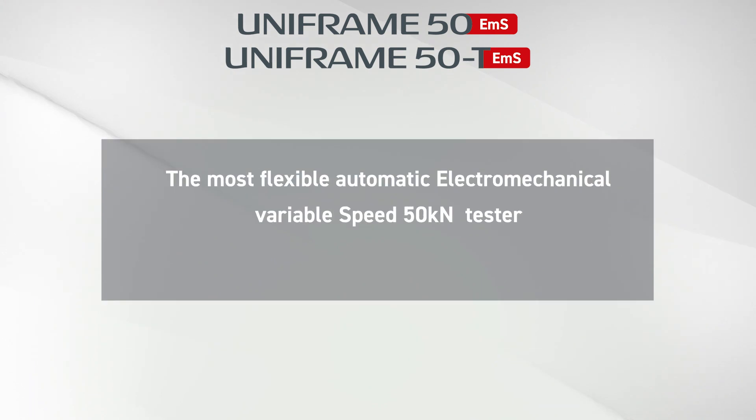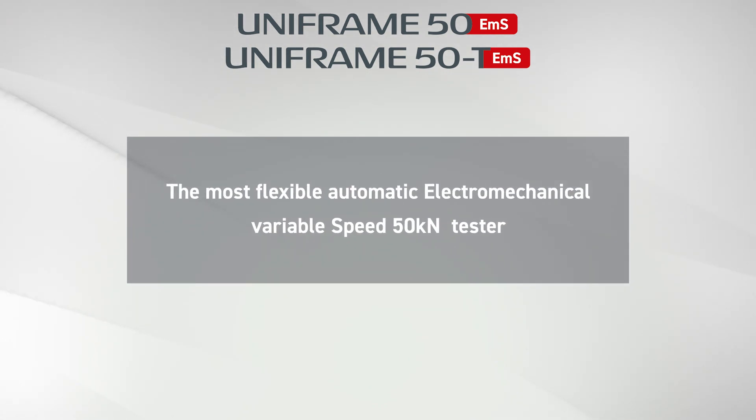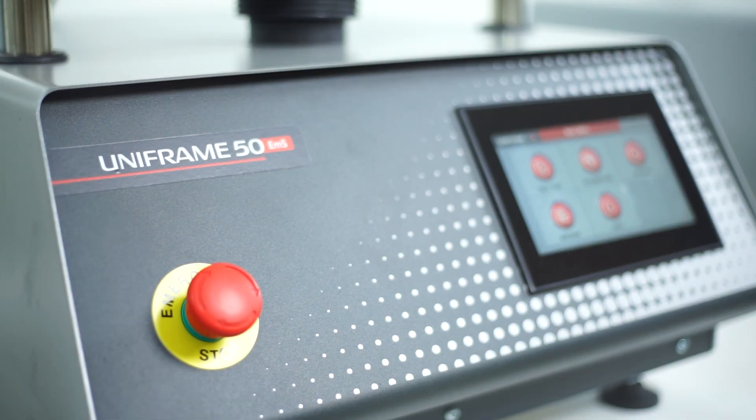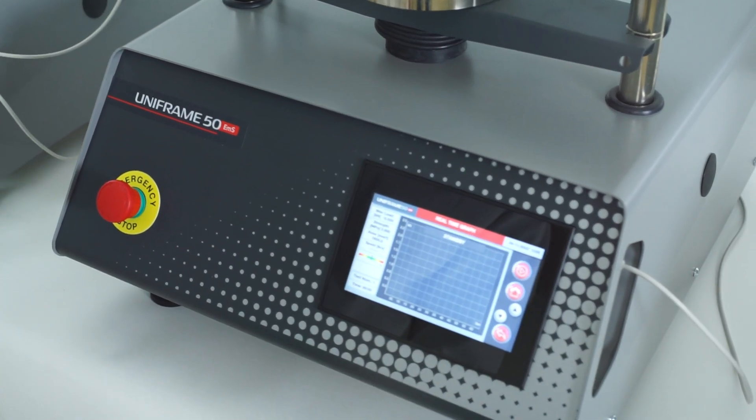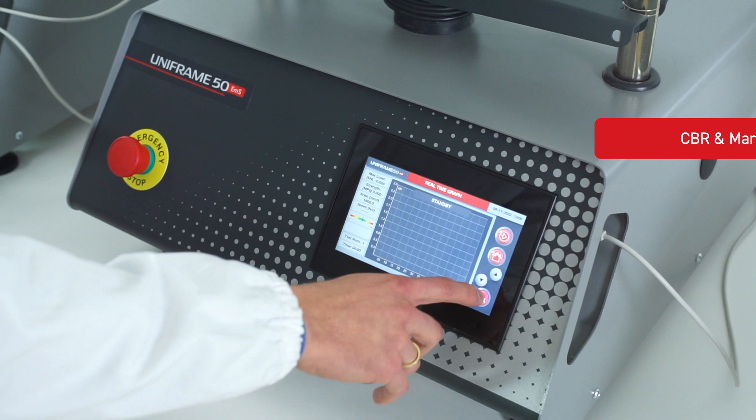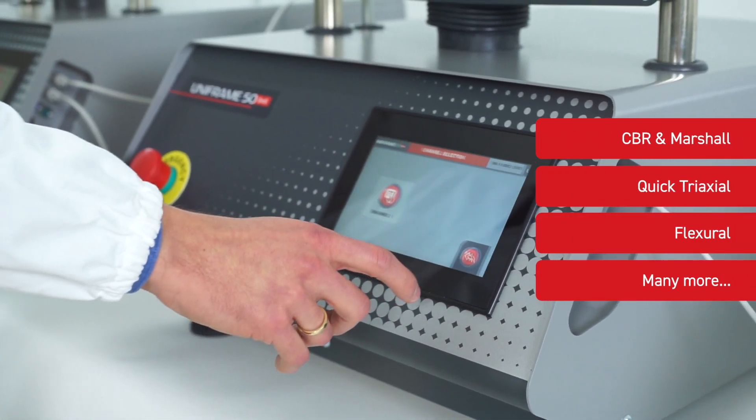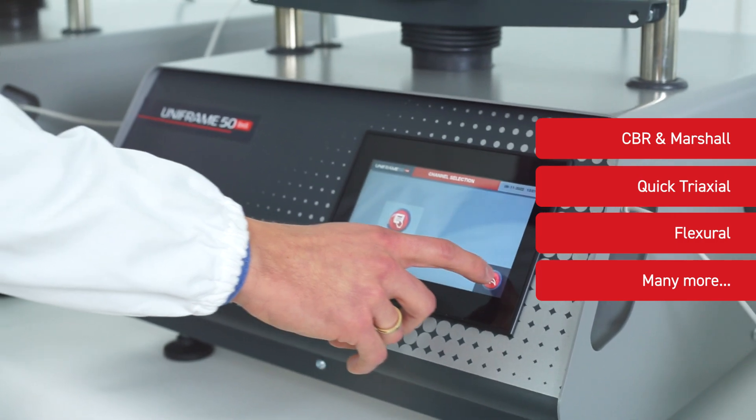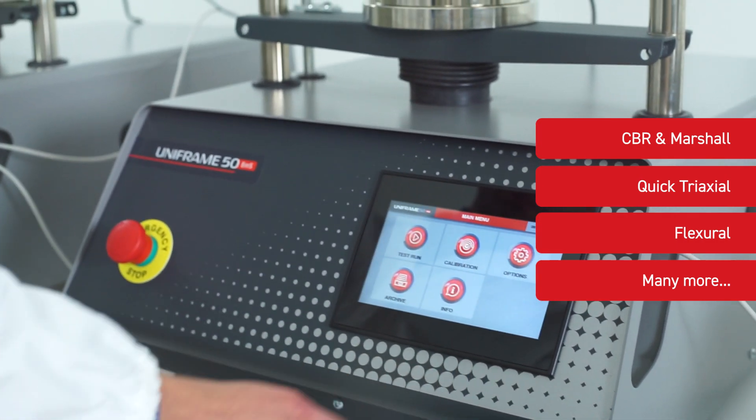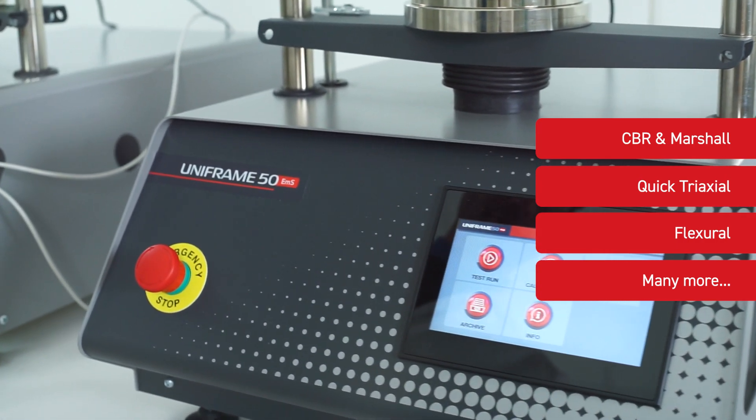The Uniframe 50 is the most flexible version in our range. Not only can it perform displacement control tests with the same features as the Multi-Loader, but it can also perform load control testing. Its large frame makes it suitable for many general-purpose testing such as CBR, Marshall, quick triaxial, flexural tests on beams and tiles, unconfined compression and punching tests.